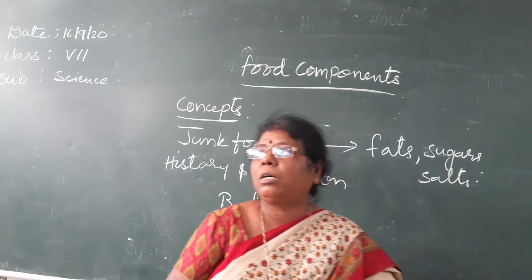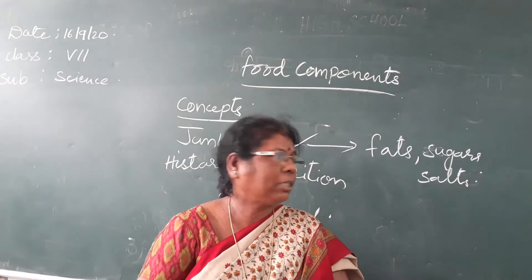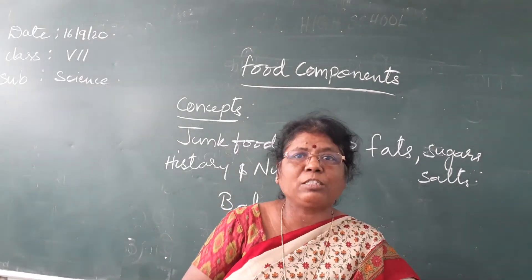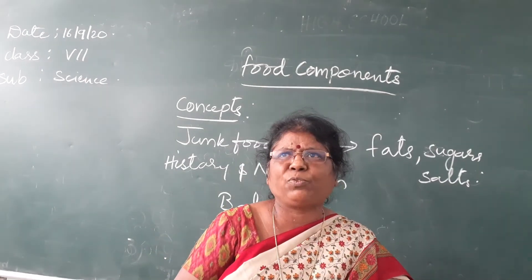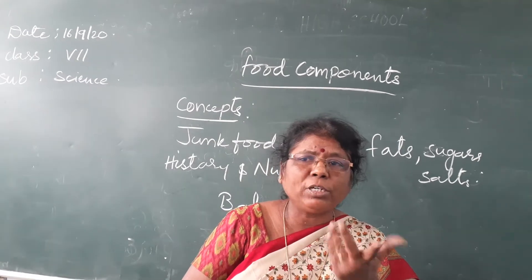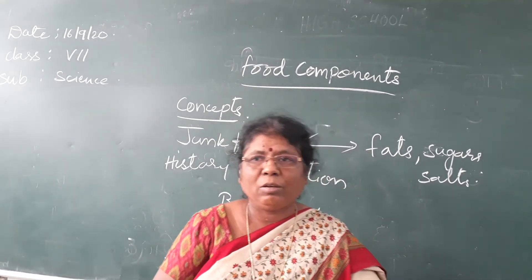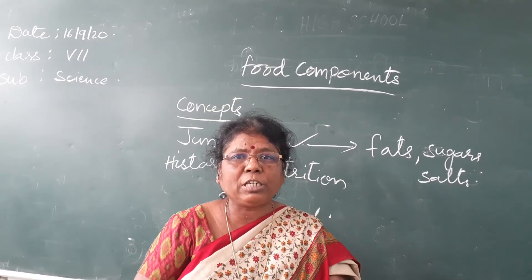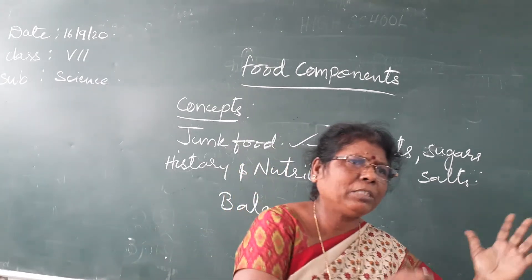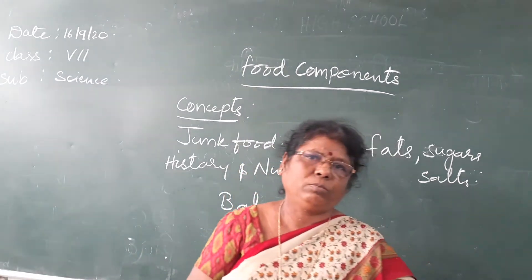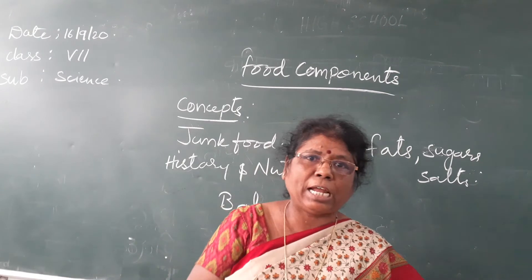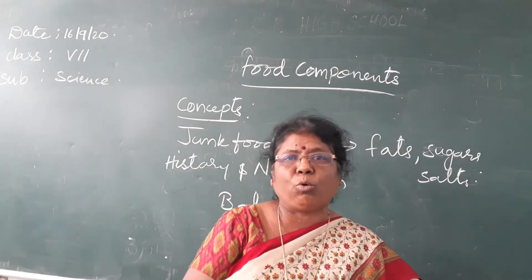What foods come under junk food? Examples: pizzas, burgers, french fries, cool drinks, juices, potato chips — all these come in junk food, which contains high calories.